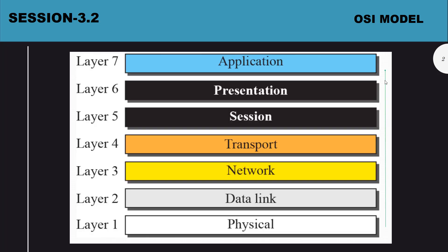So you can see the OSI model here — it consists of seven layers. In the previous video we discussed briefly about all layers, but covered deeply the data link layer and physical layer. In this video we are going to cover layer 3 and layer 4 — that is network layer and transport layer.